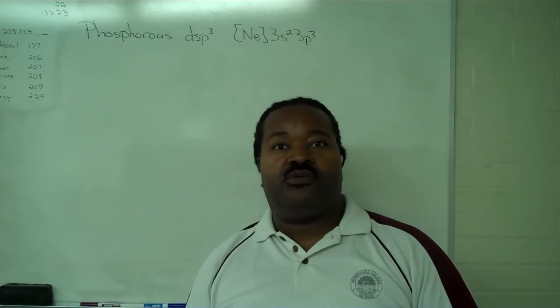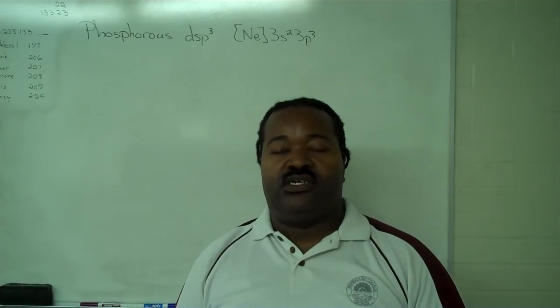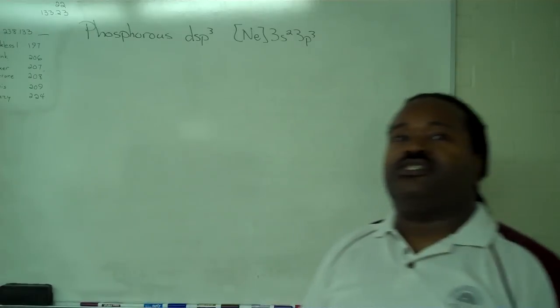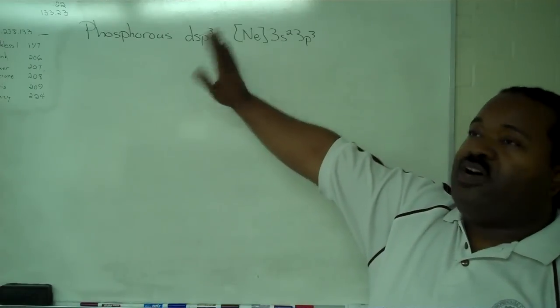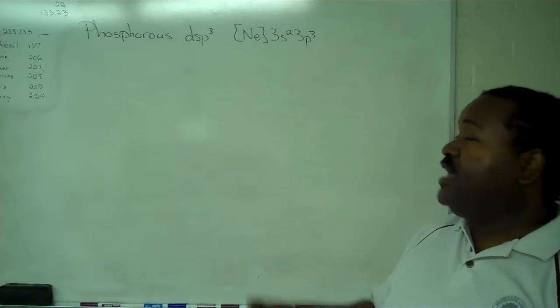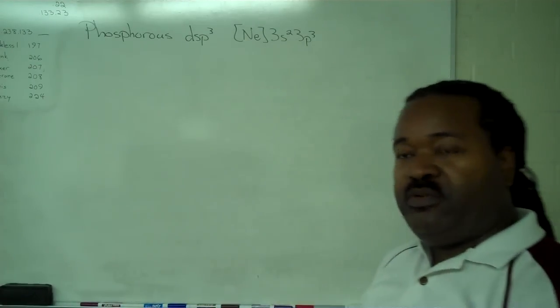This instructional video is designed to show you how to take an atom and determine what happens to its orbitals once it undergoes a particular type of hybridization. This example will be using phosphorus with dsp³ hybridization, and it's important to have the proper electron configuration written out before we get started.